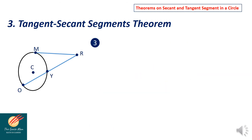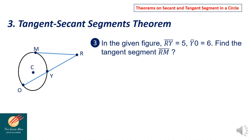Let us now consider this word problem. In the figure, RY equals 5, YO equals 6. Find the tangent segment RM. In order to get RO, this is the combination of line segment RY and line segment YO. Since RY equals 5 and YO equals 6, line segment RO equals 11.